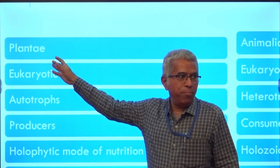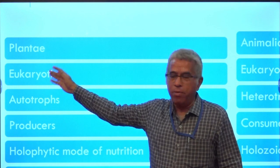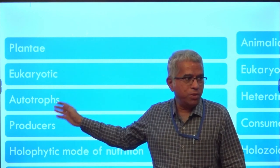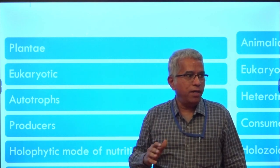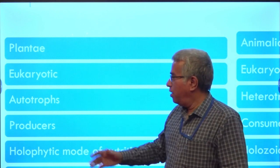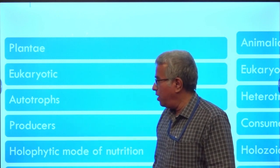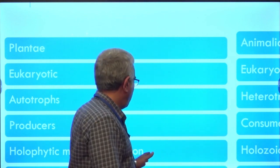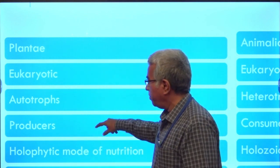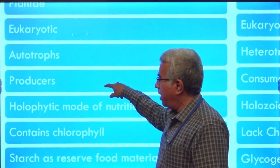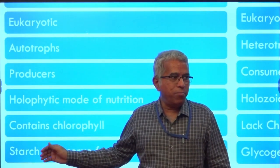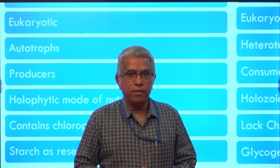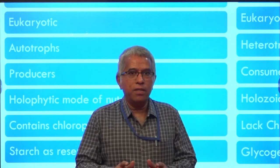Kingdom Plantae includes only plants, and these are eukaryotic autotrophs, meaning they can prepare their own food material by the process of photosynthesis. Hence these are also called producers, and the mode of nutrition is holophytic. Plants contain chlorophyll.